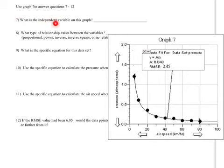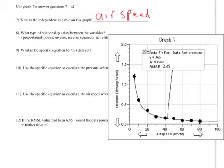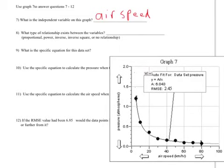For number 7, the question is what is the independent variable. Remember, the independent variable is the one on the x-axis. So in this case, what we have is airspeed. What type of relationship exists between the variables? I see it has a downward trend, which means it's either inverse or inverse squared. I look at the general equation and I see that it's y equals a over x, not x squared. So therefore, it's just an inverse relationship.